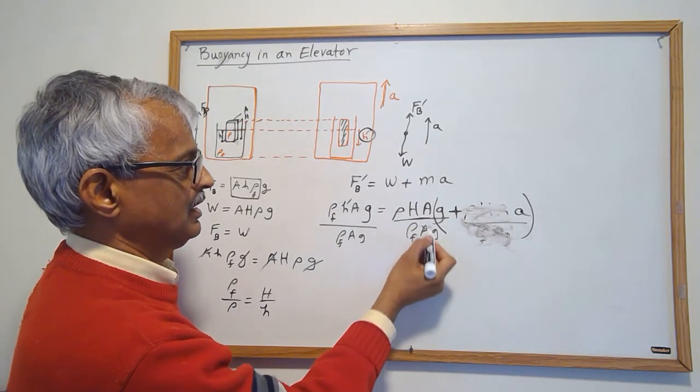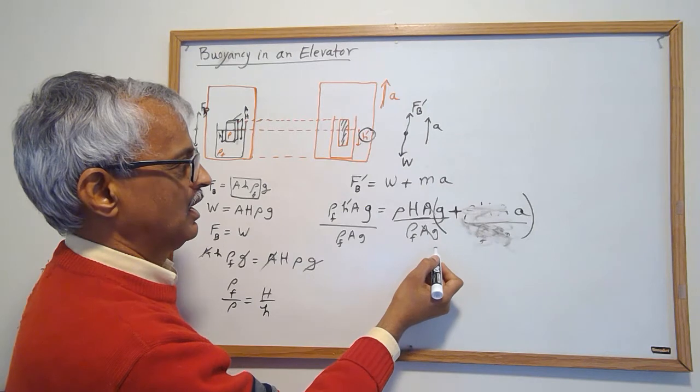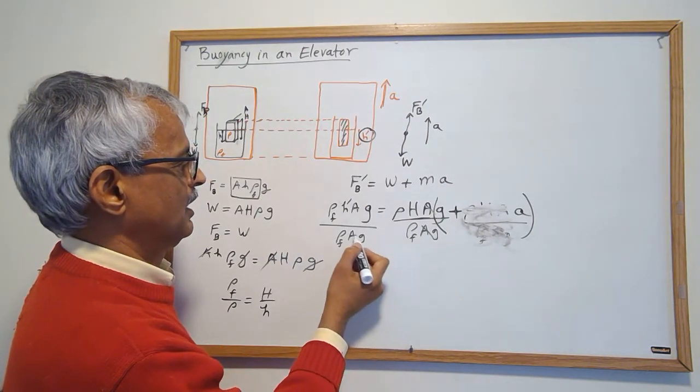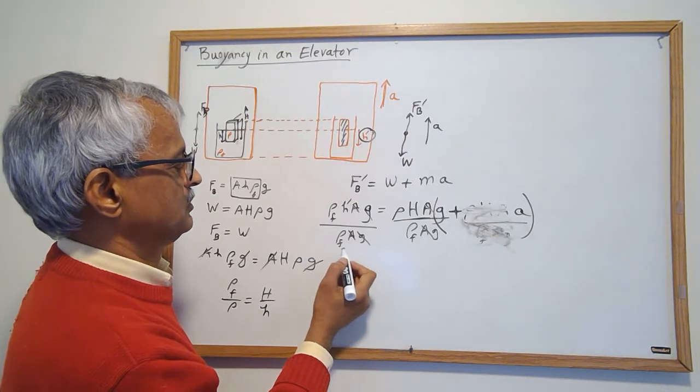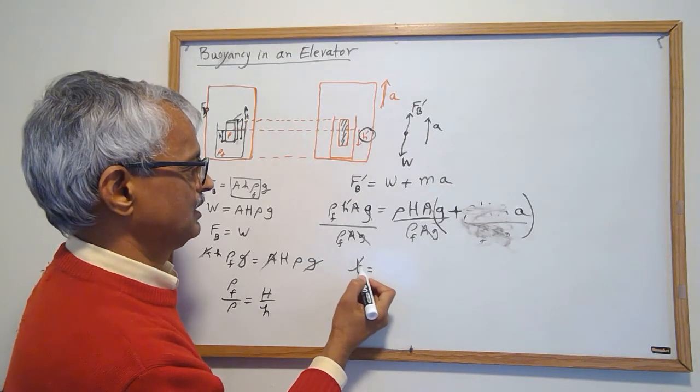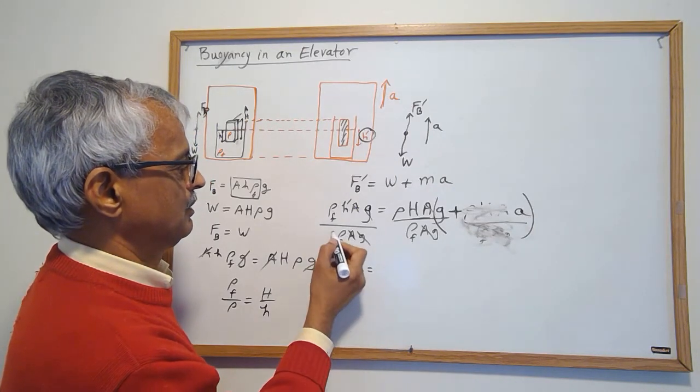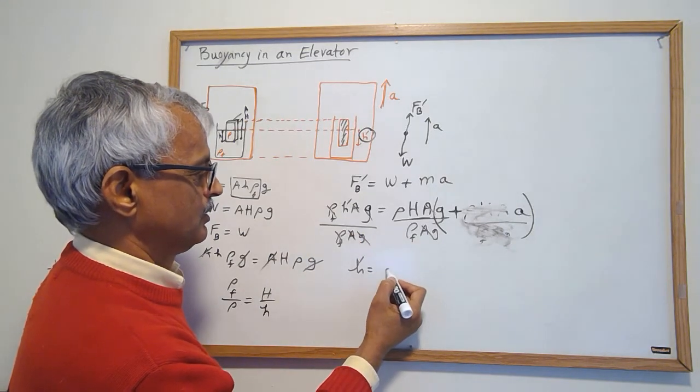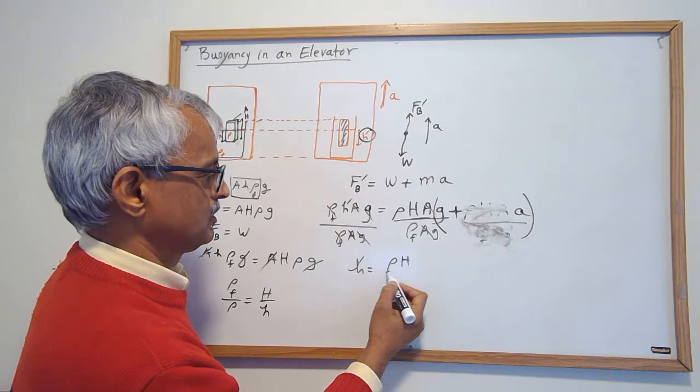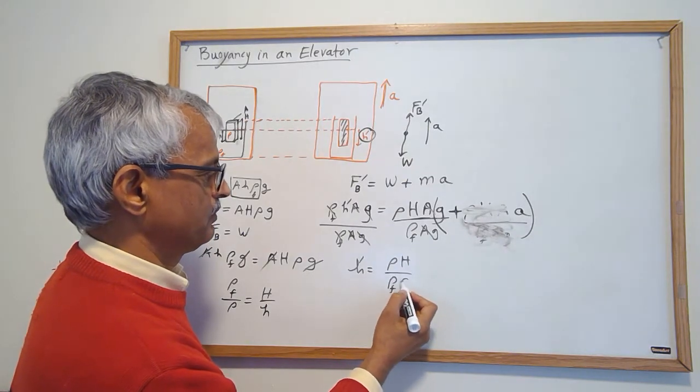So I have h prime is ρf and h prime is equal to ρ H over ρf times (g+a)/g.